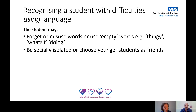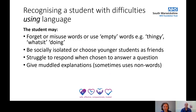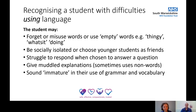They may be socially isolated or choose younger students as friends because it's easier to talk to someone younger — there's less sophisticated language needed. They may struggle to respond when chosen to answer a question. They may give rambling explanations, going round the houses because they can't quite get to the point — it's very difficult for them to use sentences correctly or get the right vocabulary. And they may sound immature in their use of grammar and vocabulary.